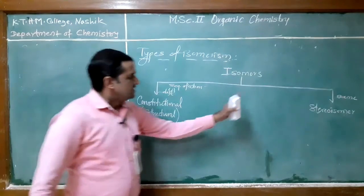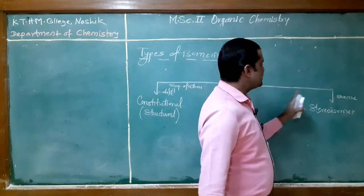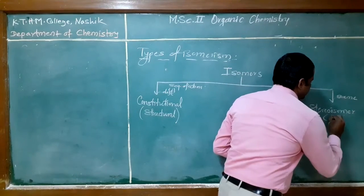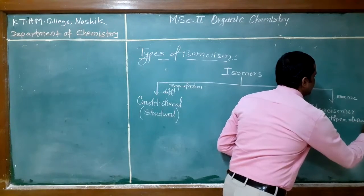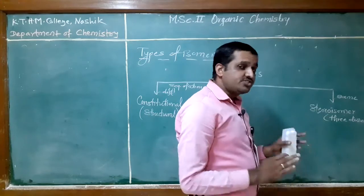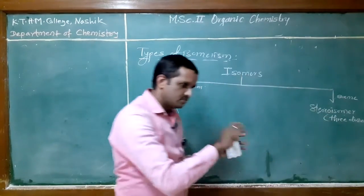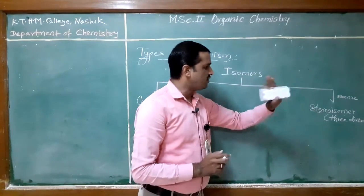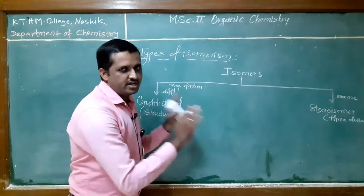In the case of stereoisomers, the sequence of atoms is the same, but the three-dimensional structure is different. The attachment sequence of one atom to another is the same, but the arrangement in three-dimensional space is different. So, stereoisomers have a different three-dimensional arrangement.